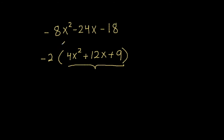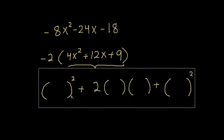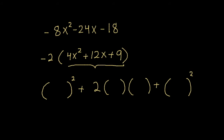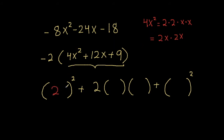Maybe we can apply perfect squares factorization to 4x squared plus 12x plus 9. Let's use the form. First question: are there two things being squared? Let's look at 4x squared — what do we square to get 4x squared? Well, 4x squared is 4 times x squared, which is 2 times 2 times x times x, and rearranging that gives 2x times 2x. So we square 2x to get 4x squared. That's one thing being squared — a good sign so far.